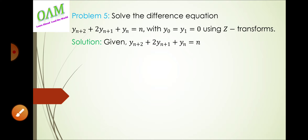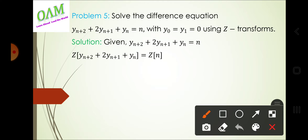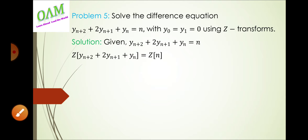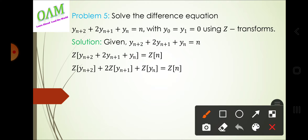Solution: The equation is given. We apply the Z-transform. Using the linearity property, we apply the Z-transform term by term: Z[y(n+2)] + 2·Z[y(n+1)] + Z[y(n)] = Z[n].